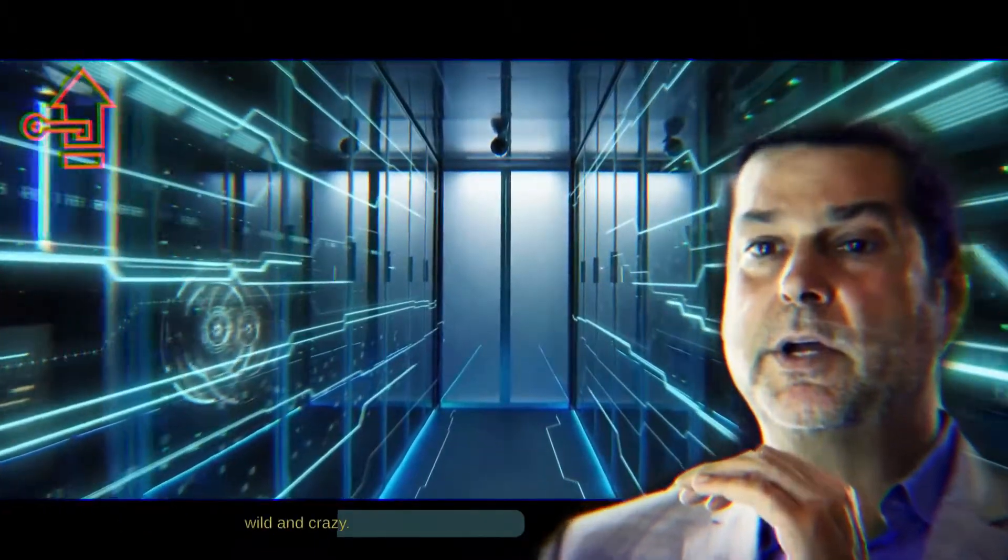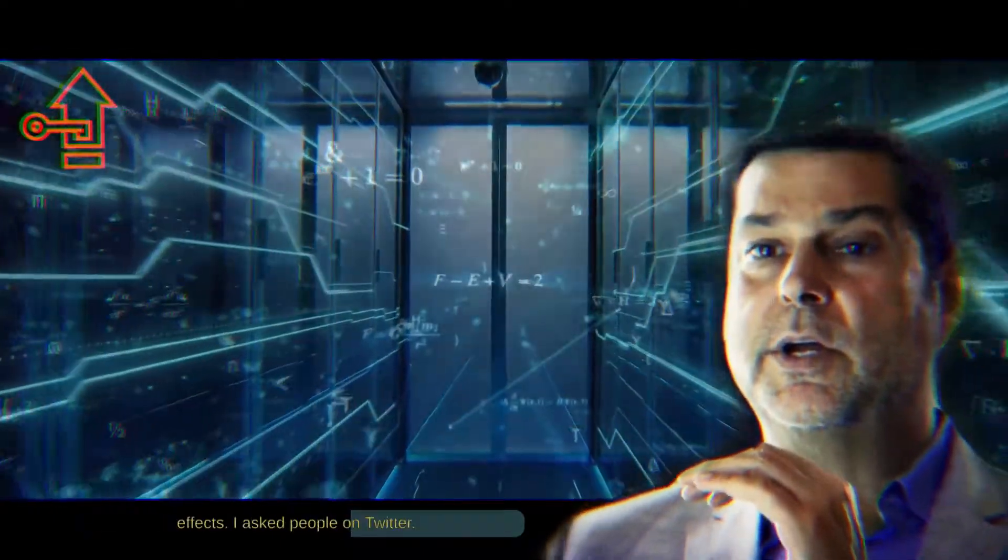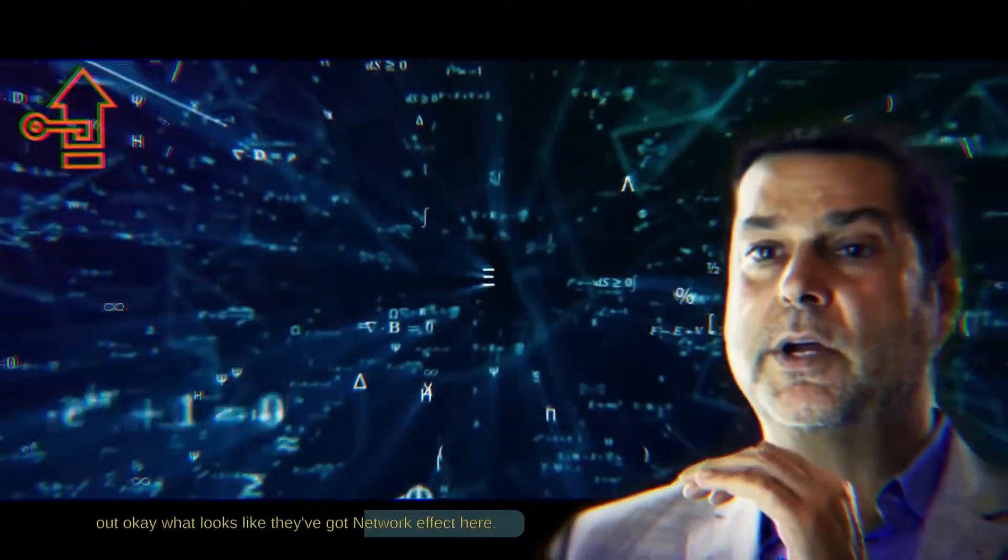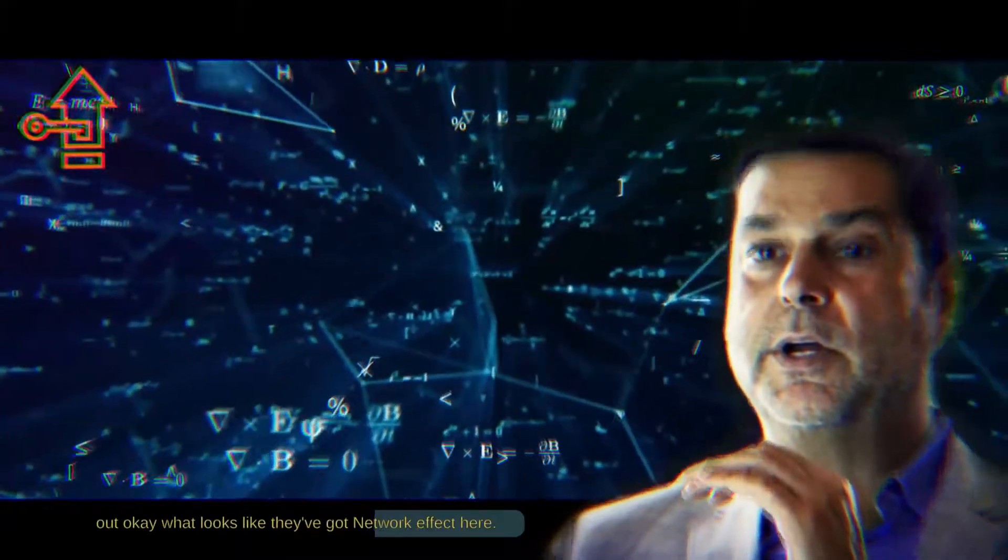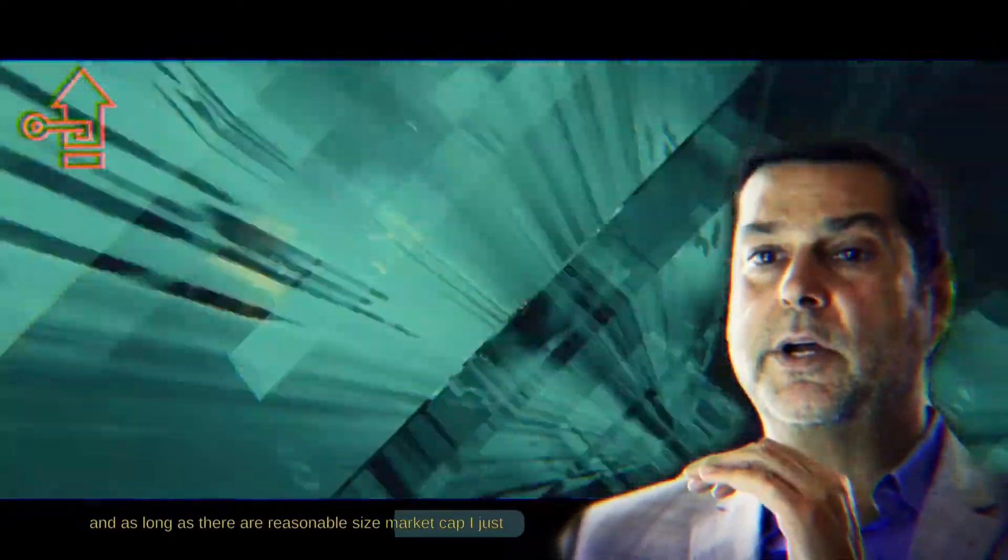The alts world is a little bit wild and crazy. I just looked at ones that looked like they were getting network effects. I asked people on Twitter, I got six and a half thousand responses. So I could figure out what looks like they've got network effects here. I look at the charts. And as long as they're a reasonable size market cap, I just took an equally weighted basket because I've no clue.